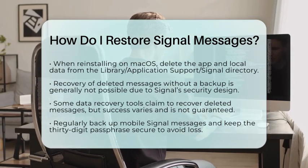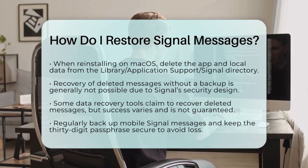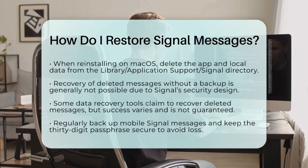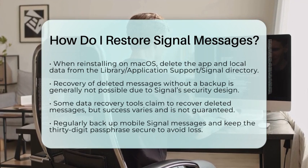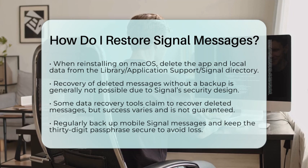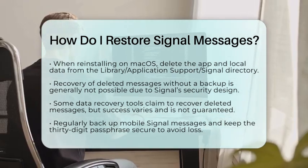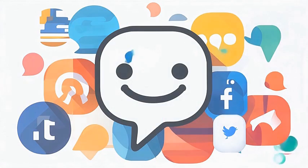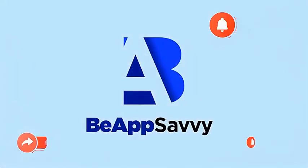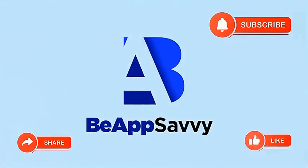In summary, restoring Signal messages relies on having a valid backup and the passphrase. On macOS, desktop message restoration is done by relinking to the mobile app after reinstalling. Without backups, message recovery is nearly impossible due to Signal's encryption and privacy focus.